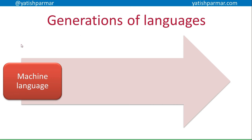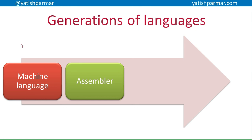In the days of the punch cards, this was followed by the second generation of assembler, making use of mnemonics to make it easier for humans to read — replacing opcodes with acronyms like ADD, MOVE, etc.